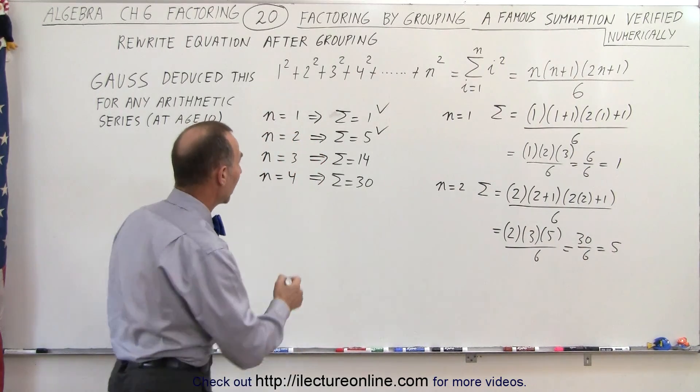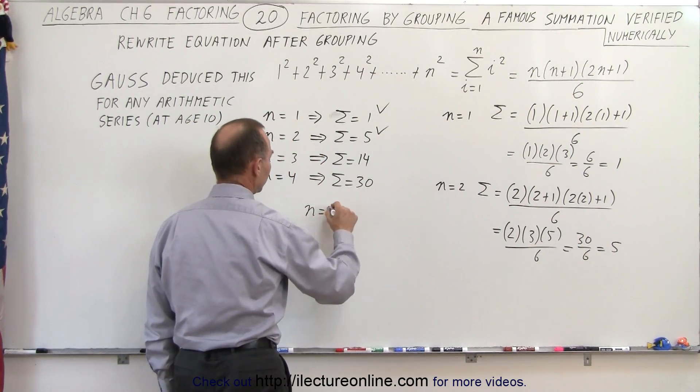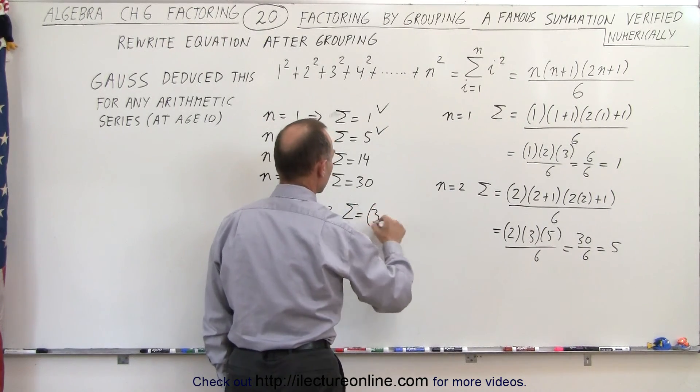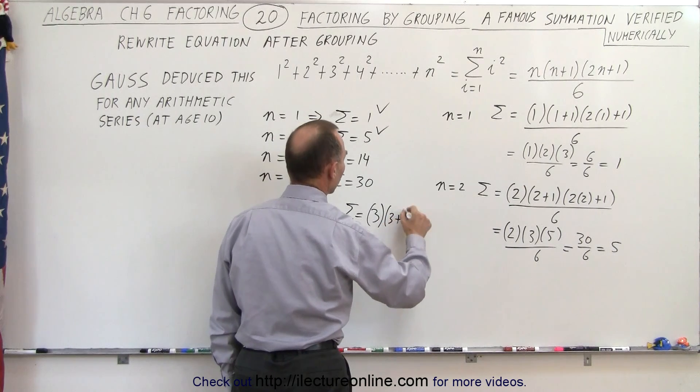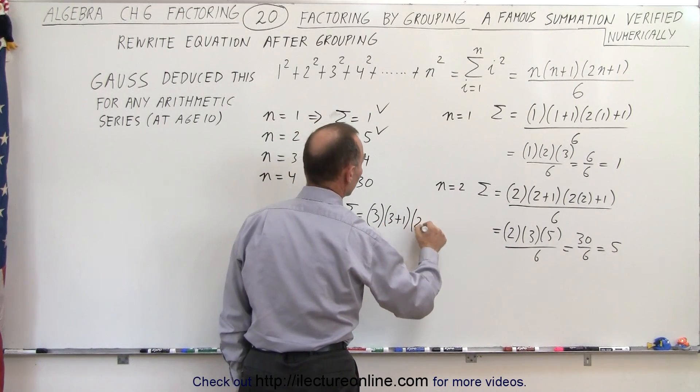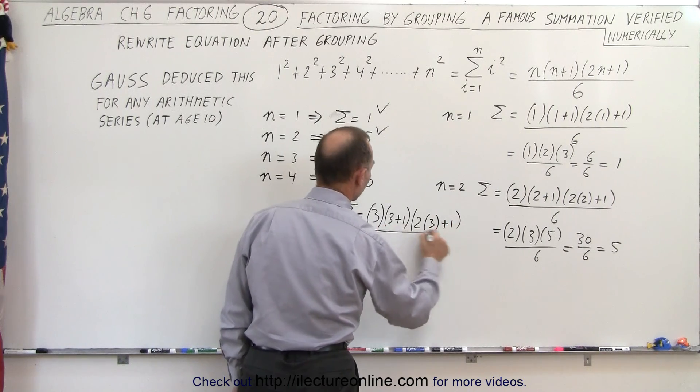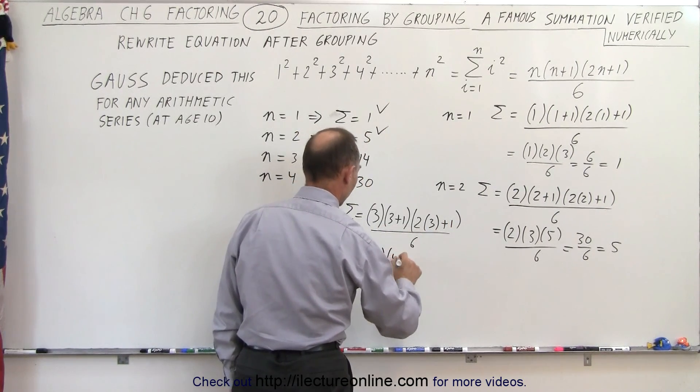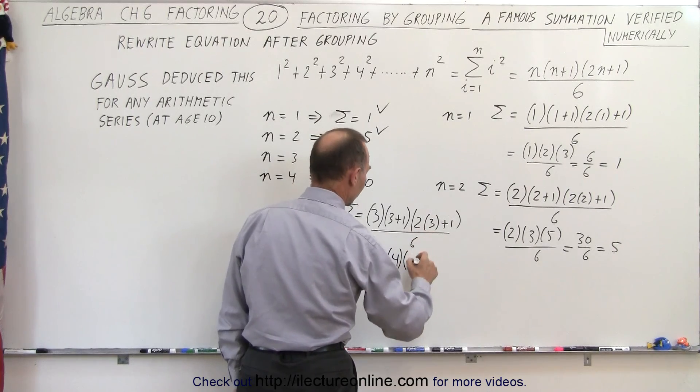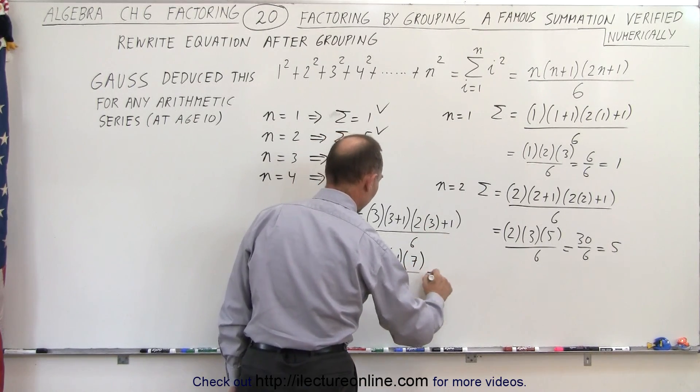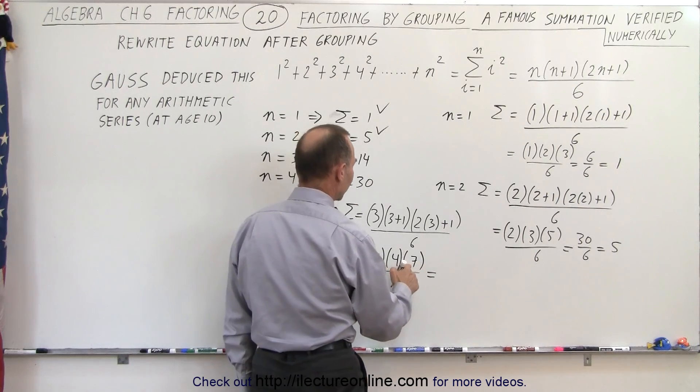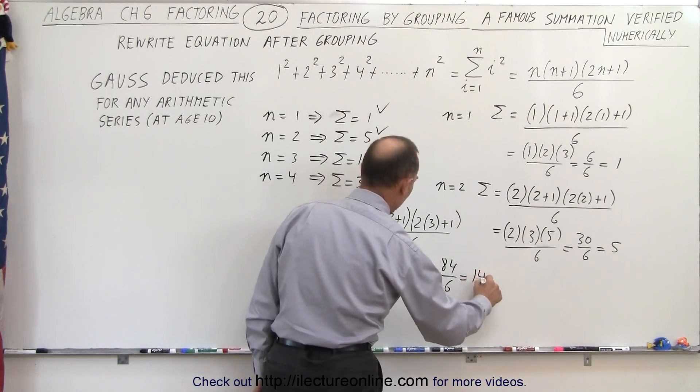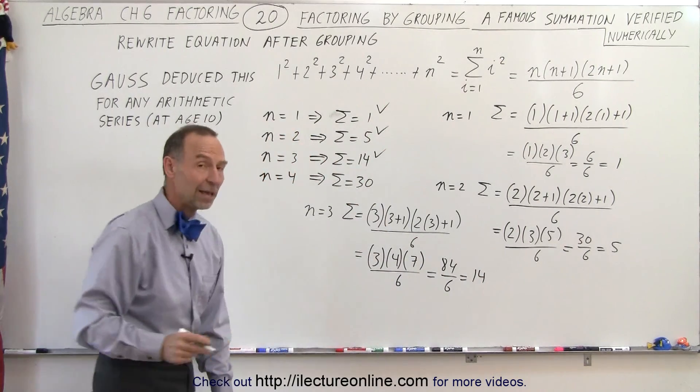Now let's try the next one when n equals 3. So that means the summation equals 3 times (3+1) times (2×3+1) all divided by 6, which equals 3 times 4 times 7, all divided by 6. That would be 12 times 7 which is 84 divided by 6, which equals 14. And sure enough that one comes out the same.